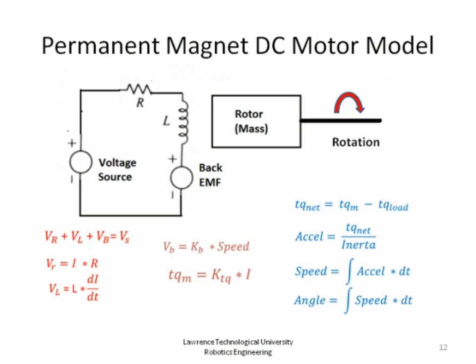Here are the components of a DC motor. It may not look like a DC motor, but schematically this is what's there. Inside the motor you have coils of wire around the rotor inside, and that coil of wire has a couple of properties. It has a resistance that we're going to call R, and it has an inductance, which we'll call L.